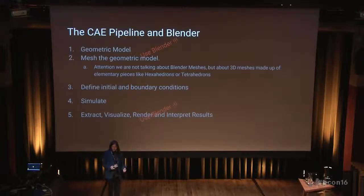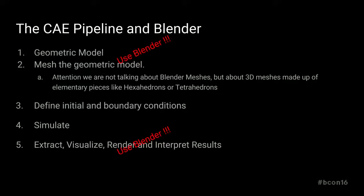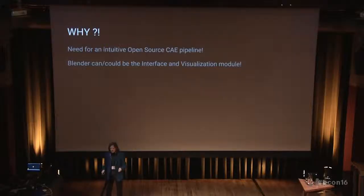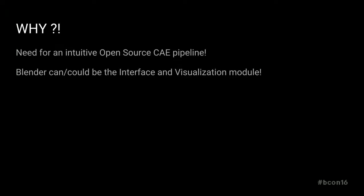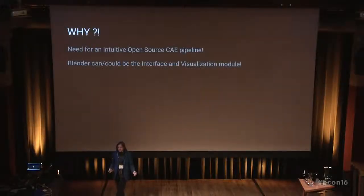So where does Blender come into all this? Blender can be used to create the geometric model, and of course to extract, visualize, and render all these kinds of results. There is also some physics inside Blender, but in this case we want to use Blender together with open source engines — doing the geometric modeling and visualization. Maybe in the future, people are writing Python interfaces so that you could do everything inside Blender — that would be the optimal world. There is clearly a need for an intuitive, open source computer-aided engineering platform, which at the moment doesn't exist.